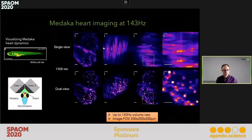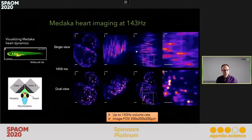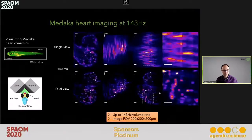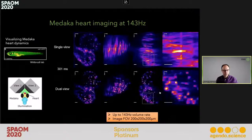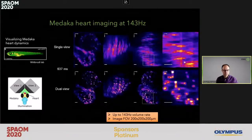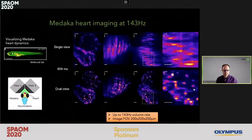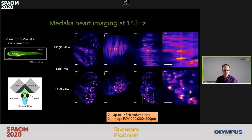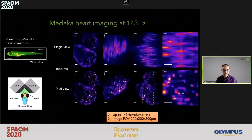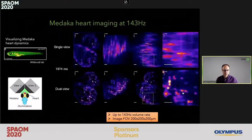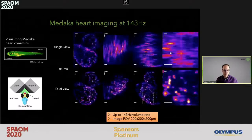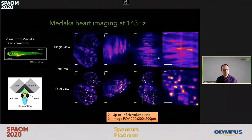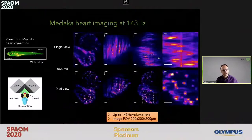On the top is the single-view reconstructed light field, and on the bottom is the dual-view result. In the zoomed-in regions, in the dual view, we can really make out individual nuclei of the myocardium, which are completely lost in the normal single-view light field microscopy.